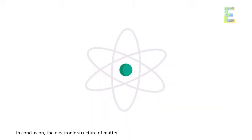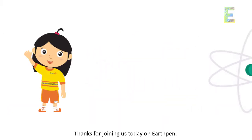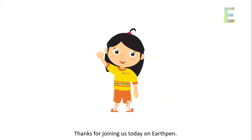In conclusion, the electronic structure of matter is like the hidden code that shapes our physical reality. Thanks for joining us today on EarthPen.